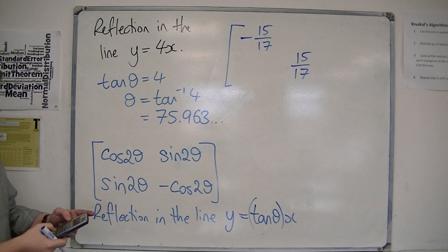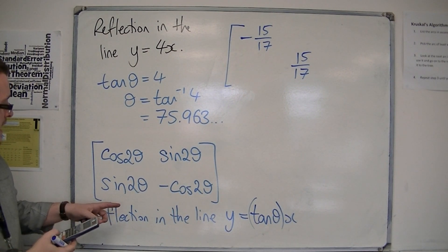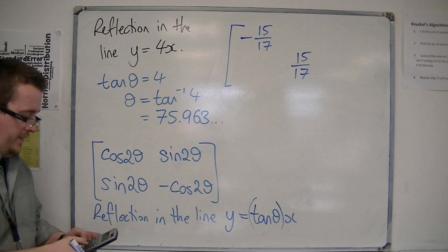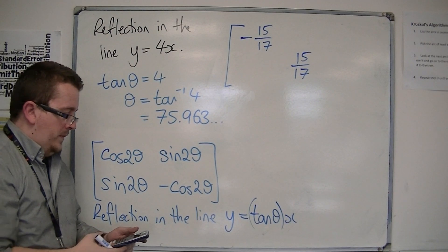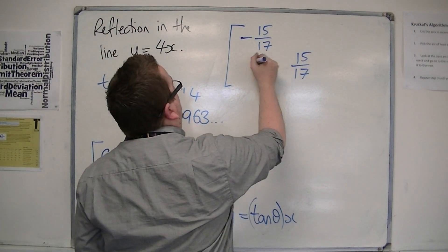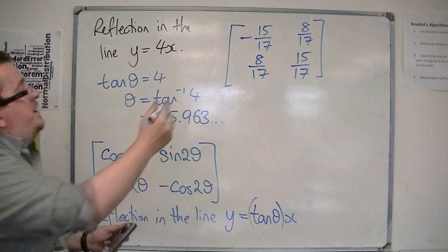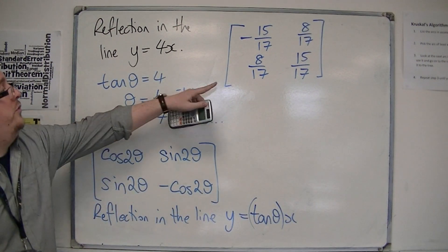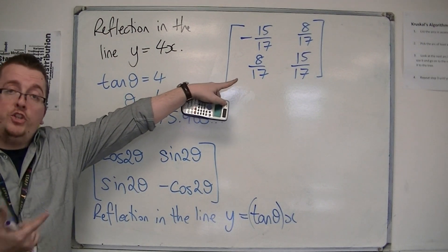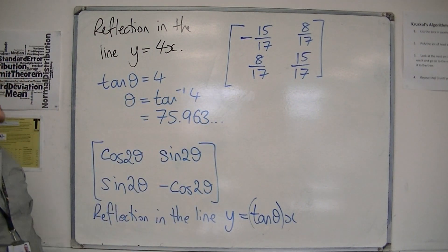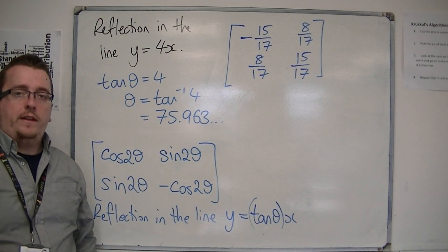And then if I do that again, now I'm using sine of 2 theta, I get 8 over 17. And so this is the matrix that I want. This will reflect my shape or my points in the line y equals 4x.